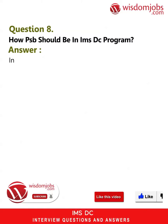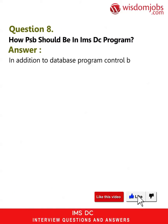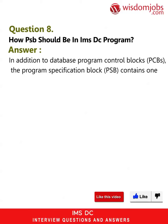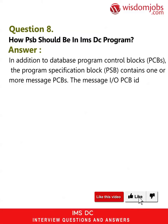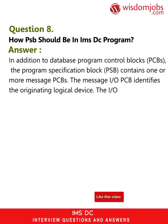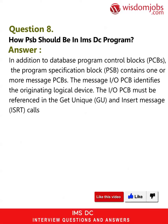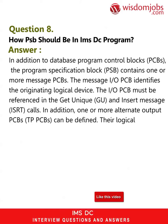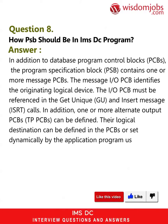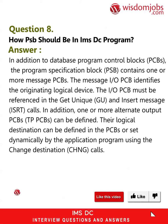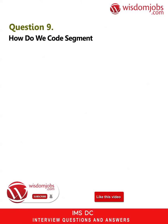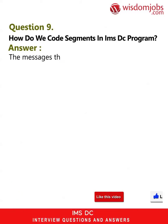CHNG (Change Destination) — set the output destination for subsequent insert calls. Question 8: How should the PSB be in an IMS DC program? Answer: In addition to database program control blocks (PCBs), the Program Specification Block (PSB) contains one or more message PCBs. The message I/O PCB identifies the originating logical device. The IOPCB must be referenced in the GU and ISRT message calls. In addition, one or more alternate output PCBs (TP PCBs) can be defined, with their logical destination defined in the PCBs or set dynamically using CHNG calls.